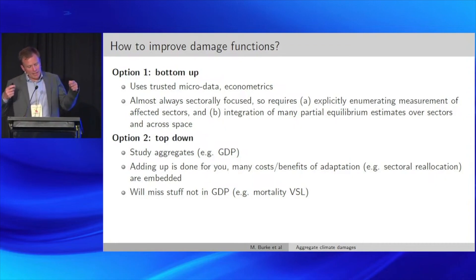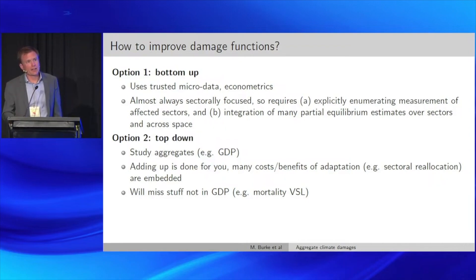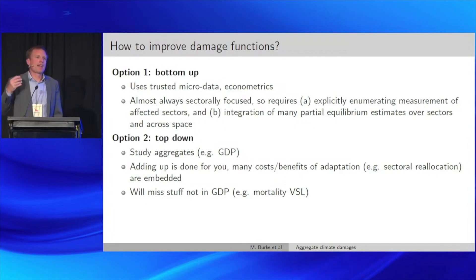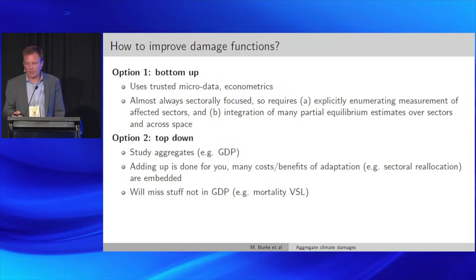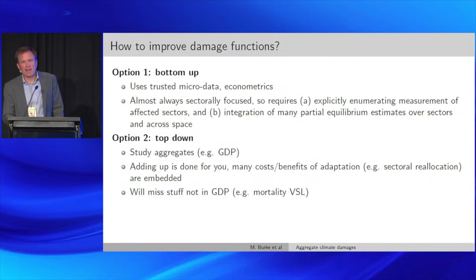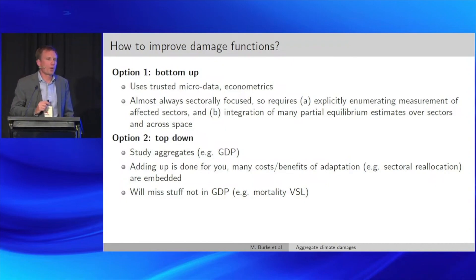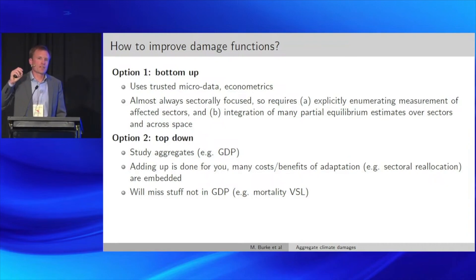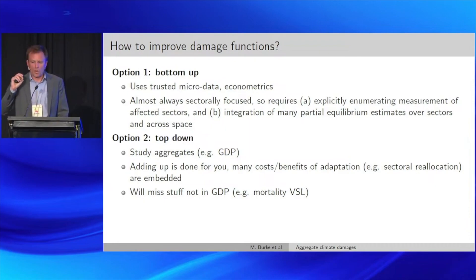The top-down approach captures sectors that interact importantly in generating economic aggregates — labor productivity, agriculture — those are observed in GDP. If sectors interact in important ways, studying the aggregates directly means a lot of the adding-up is done for you without taking a stand on how to sum across sectors. Similarly, many costs and benefits of adaptation — if there's sectoral reallocation as part of the adaptation process — the aggregates arguably capture that in a way sector-specific estimates won't.